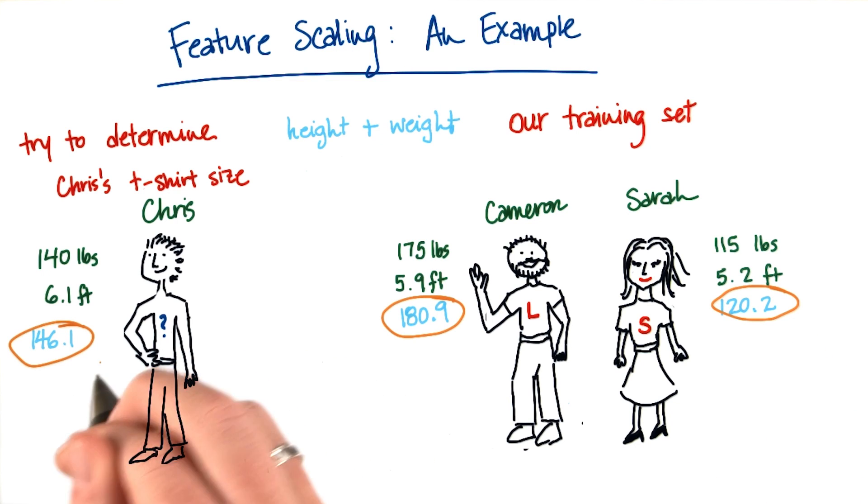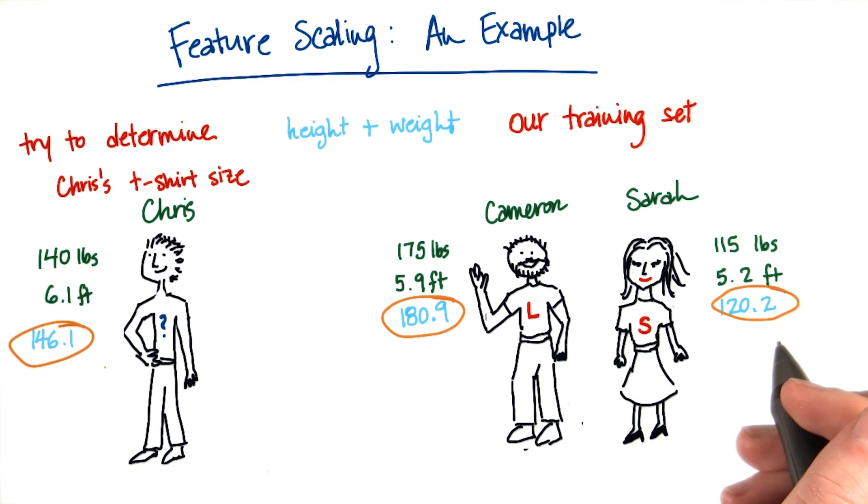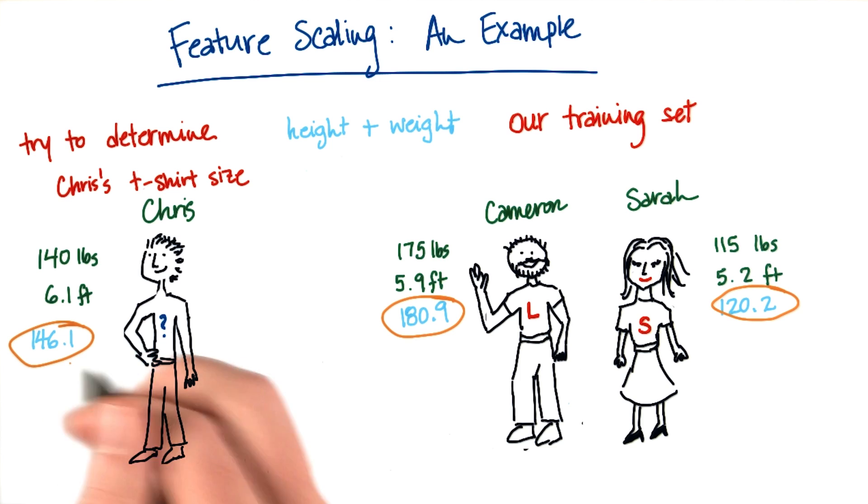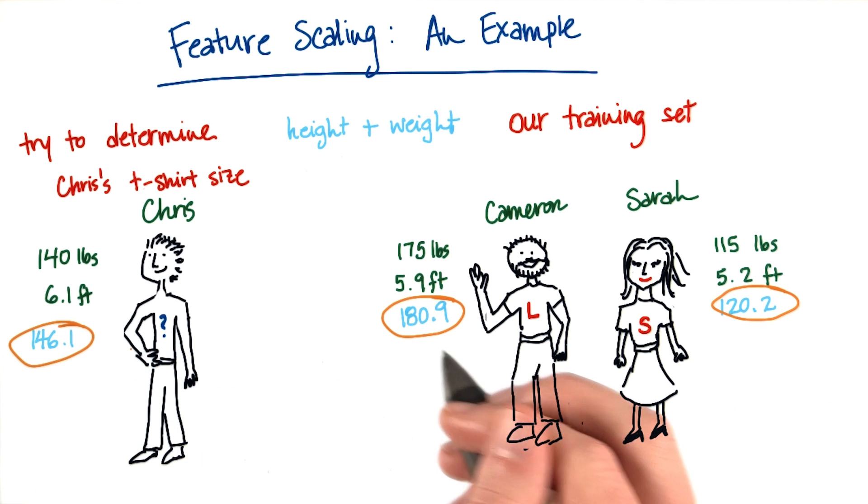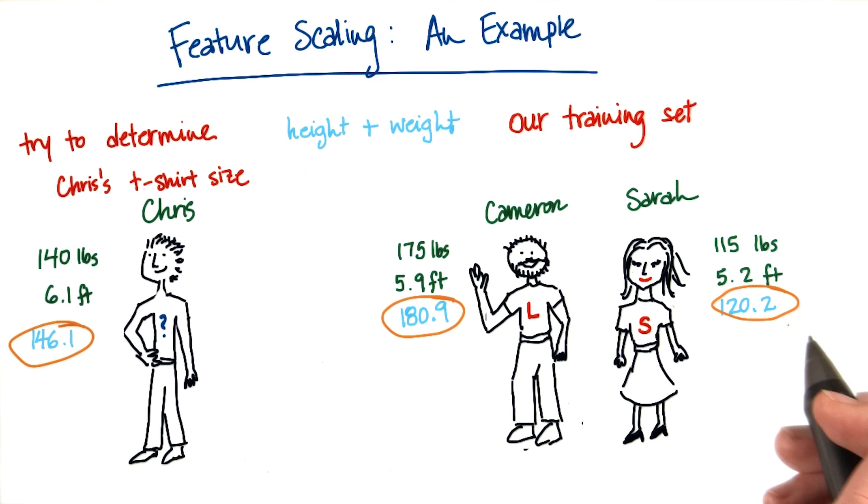So the way that I got the result that Chris should be wearing the same size t-shirt as Sarah rather than Cameron is that I compared these numbers that I computed for each of these people. And I said, is Chris closer to Cameron's number or to Sarah's number?